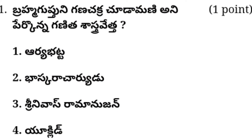First one: Brahma Gupta — Ganita Chakra Chudamani, and the name of Ganita Shastra Beta. Option one: Aryabhatta. Option two: Bhaskaracharya. Option three: Srinivas Ramanujan. Option four: Euclid.